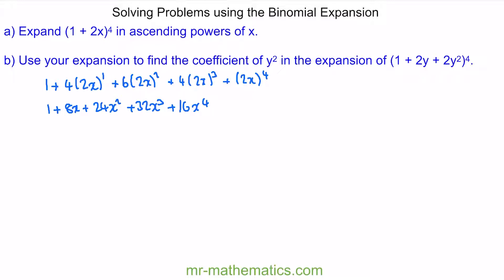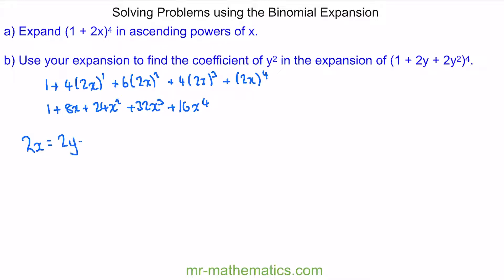Now we've done part A. We're going to use our expansion to find the coefficient of y squared in the expansion of 1 plus 2y plus 2y squared, all to the power of 4. Comparing with the original expansion, the 1 is common, and the 2x term corresponds to the 2y plus 2y squared term since the powers are the same. So we can write 2x equals 2y plus 2y squared. Factorising and cancelling the 2s gives x equals y plus y squared.